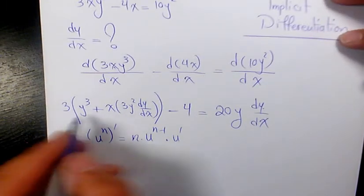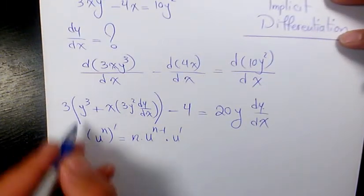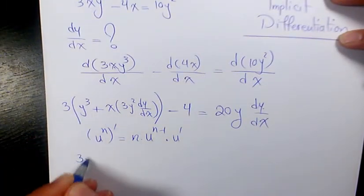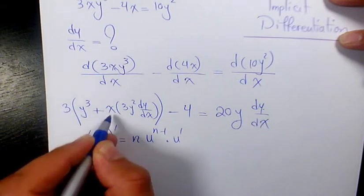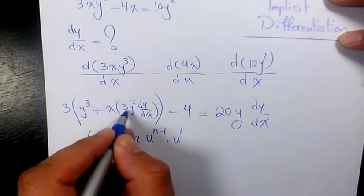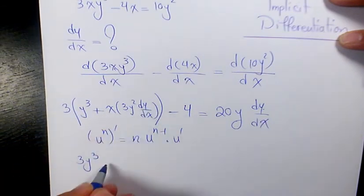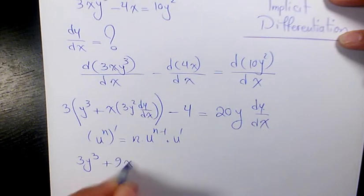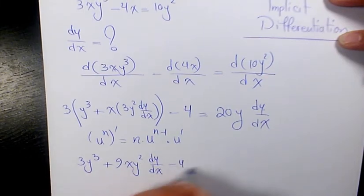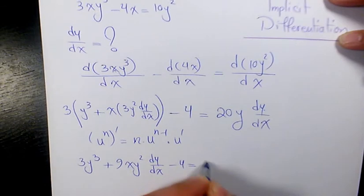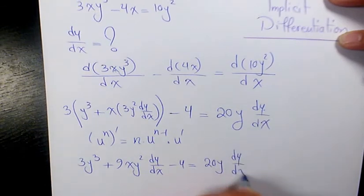Let's simplify: 3 times y³ is 3y³, and 3 times x times 3y² dy/dx is 9xy² dy/dx. So we have 3y³ plus 9xy² dy/dx minus 4 equals 20y dy/dx.